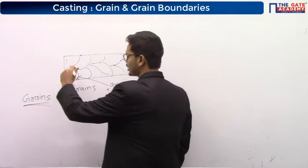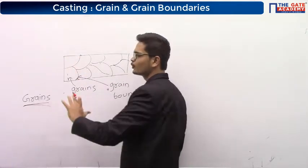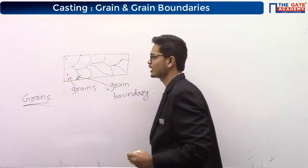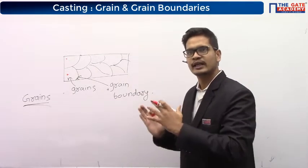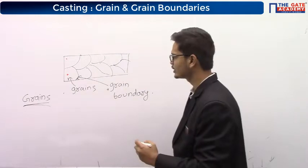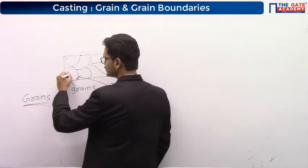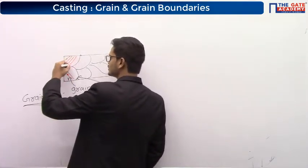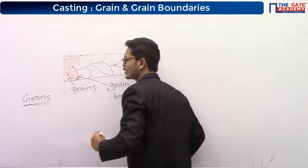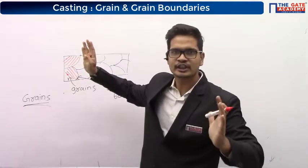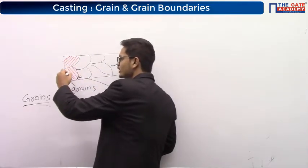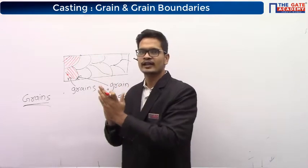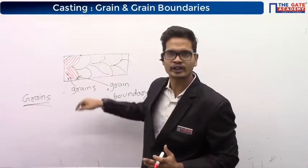What happens is, when the solidification starts, let's suppose you took liquid metal — the molten metal. At this point, the solidification started. As the solidification proceeds, the crystals grow in size. From both sides the crystals are growing. So two fully grown crystals will avoid the growth of each other.